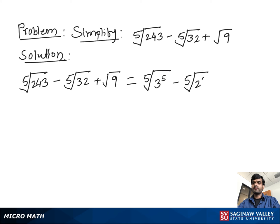Plus square root of 3 to the 2nd power, which is 9. Then we get: 5th root of 3 to the 5th is 3, minus 5th root of 2 to the 5th is 2, plus square root of 3 to the 2nd power is 3.